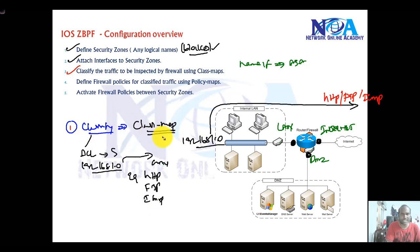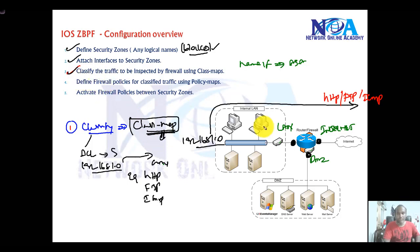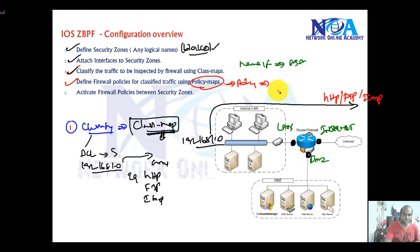This is similar to the class maps we did in the basic configurations — in ASA class maps or even in control plane policing. Once you define what traffic you want to allow, we need to configure a policy map. In the policy map we define what action to take. Generally we have multiple options: we can say pass, drop, or inspect.